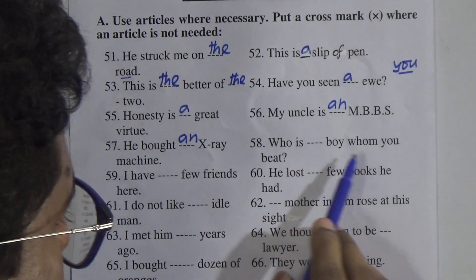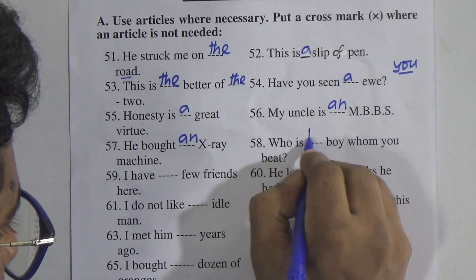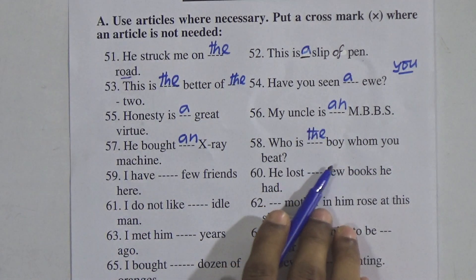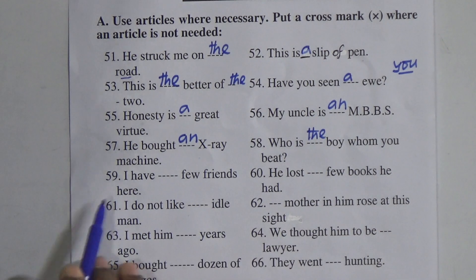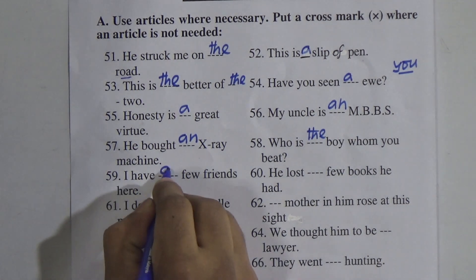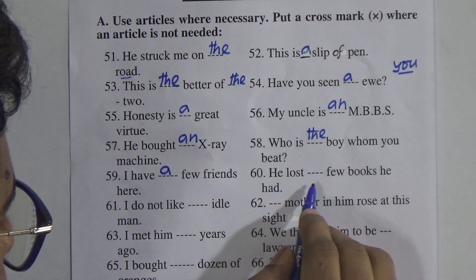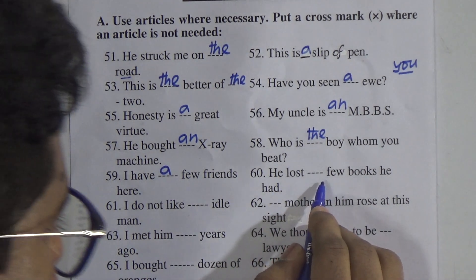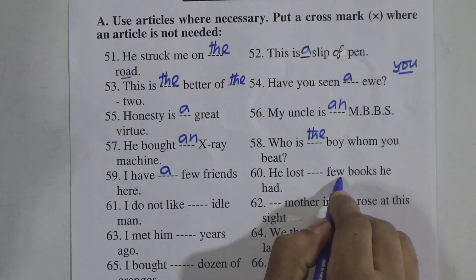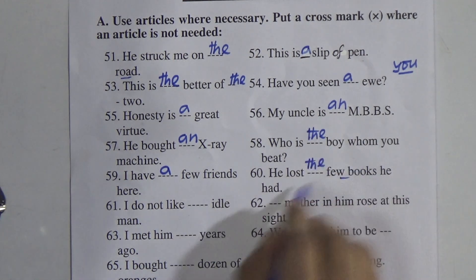Number 58: 'Who is — boy whom you beat?' The boy is specific here, so the answer is 'the' — 'Who is the boy whom you beat?' Number 59: 'I have — few friends.' Answer: 'I have a few friends.' Number 60: 'He lost — few books he had.' The few books are specified, so the answer is 'the' — 'He lost the few books he had.'